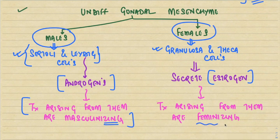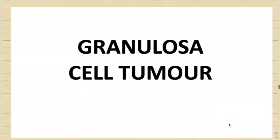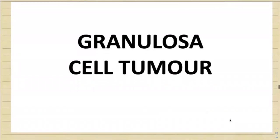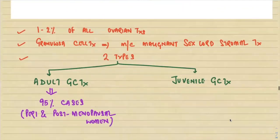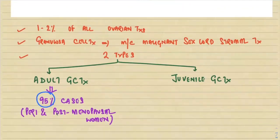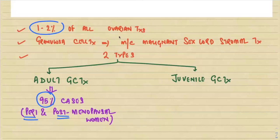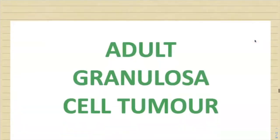Sex cord stromal tumors are usually hormone-producing — androgens and estrogen. If a patient presents with defeminization or precocious puberty, consider sex cord stromal tumors. The granulosa cell tumor is of two main types: adult (constituting 95 percent of all cases, involving peri- and post-menopausal women) and juvenile. Granulosa cell tumors constitute only 1–2 percent of ovarian tumors, and the granulosa cell tumor is the most common malignant sex cord stromal tumor.